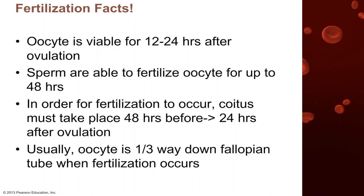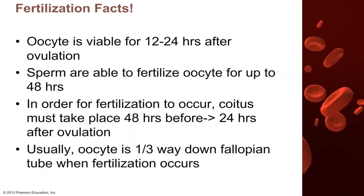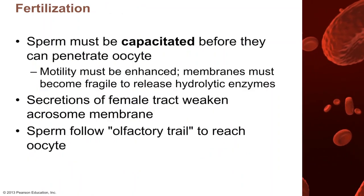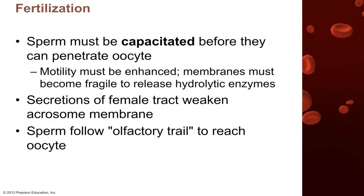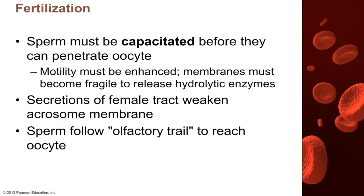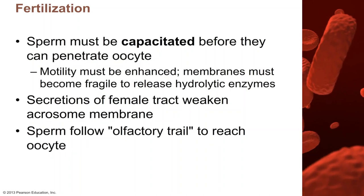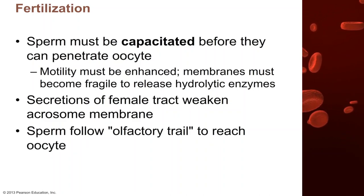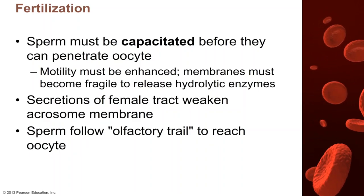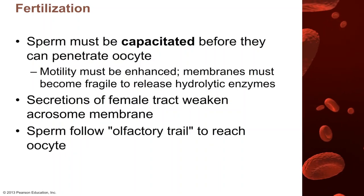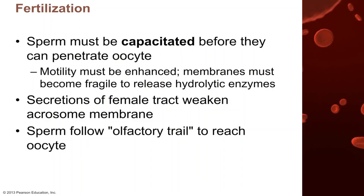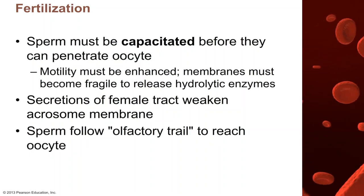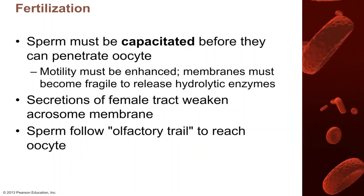Fertilization takes place in the fallopian tube, and eventually that fertilized oocyte will move out of the fallopian tube and implant in the superior part of the uterus. Sperm enter the female's reproductive tract during sexual intercourse through ejaculation. Sperm and seminal fluid are ejaculated into the vagina, and some of that fluid moves from the vagina up through the cervix into the uterus and eventually into the fallopian tubes — partly through reverse peristalsis, as prostaglandins in the seminal fluid induce micro muscle contractions. The sperm also have to swim from the entrance of the fallopian tube all the way up to the ovulated oocyte.